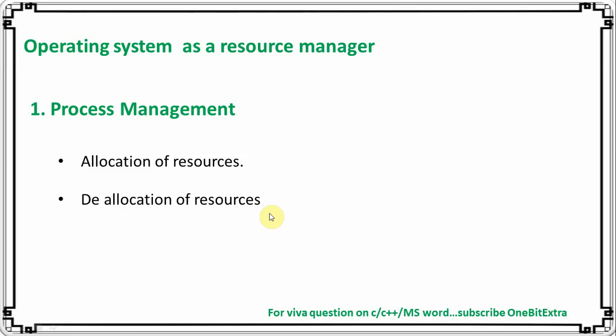The operating system decides which resource will be given to which process, then allocates the resource and later de-allocates it. This is the responsibility of the operating system.